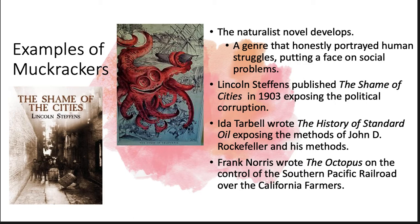One naturalist novel that comes out of this time is Lincoln Steffens' 'The Shame of the Cities.' It's meant to expose political corruption — the political machines that had formed — and how that was hurting cities, not helping them. Cities were falling apart because people were stealing from the funds that were supposed to fix them.